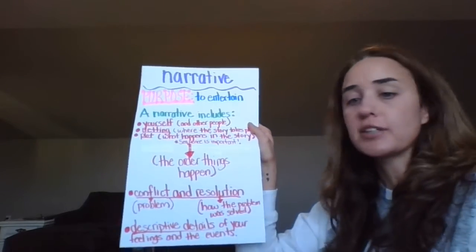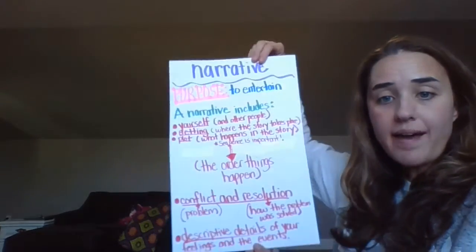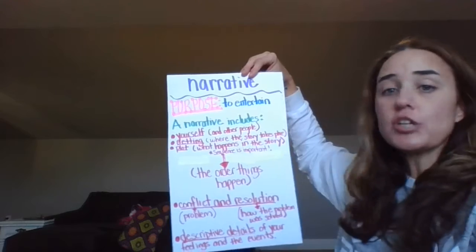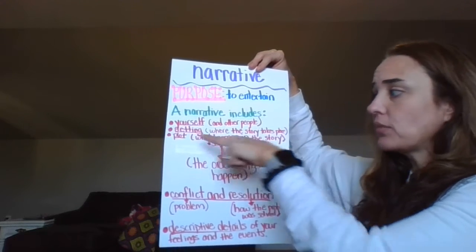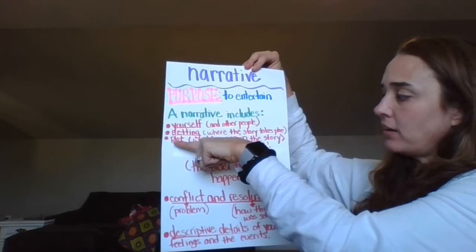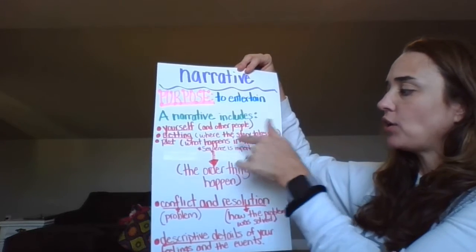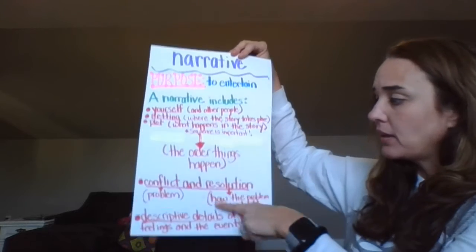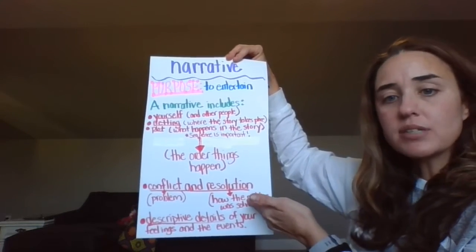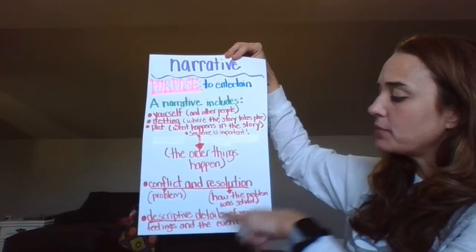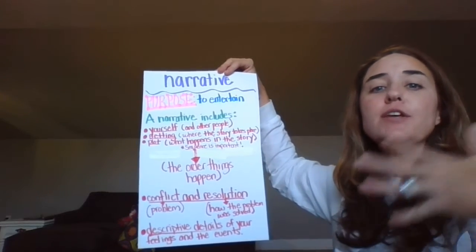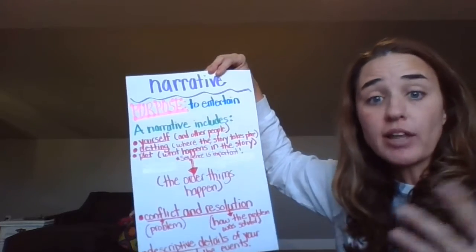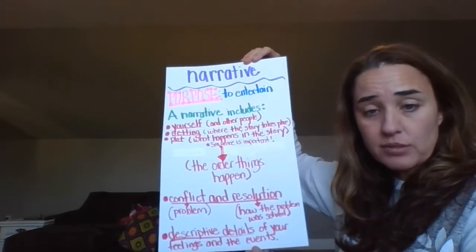You want to make sure your story has all these elements — the only optional element is the conflict and resolution. To recap: your purpose is just to entertain. Your narrative includes yourself and other people as your characters, the setting where the story takes place, the plot and what happens, and sequence — the order things happen — is very important. Conflict and resolution, a problem and how it was solved, is optional. And descriptive details of your feelings and events — we want to know how you feel and what things looked like, smelled like, or sounded like.